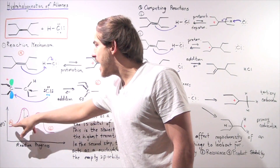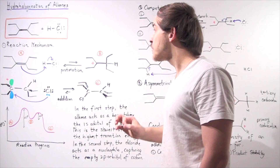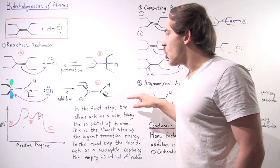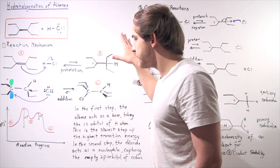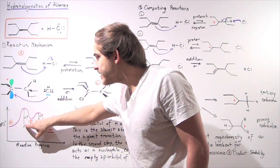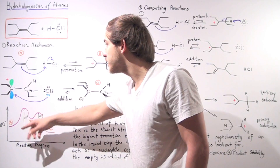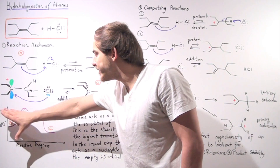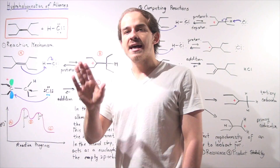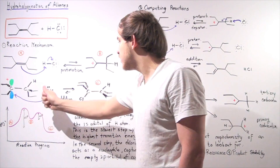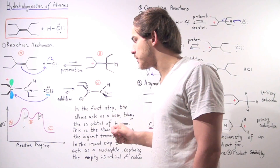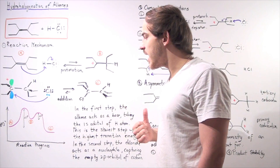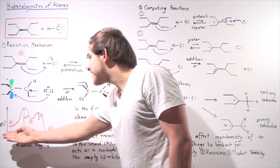When we go from A to B, our reaction is endothermic because we create a carbocation intermediate. The activation energy is given by the Gibbs free energy of activation for the protonation reaction. Notice this is the highest transition state on our entire diagram. When B goes to C, our reaction is exothermic, or exergonic — energy is released into the environment.